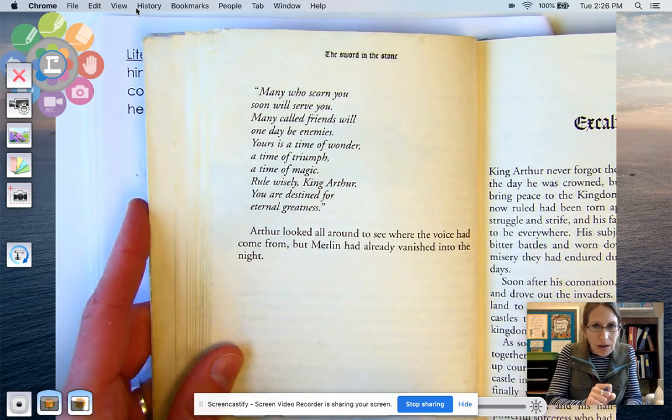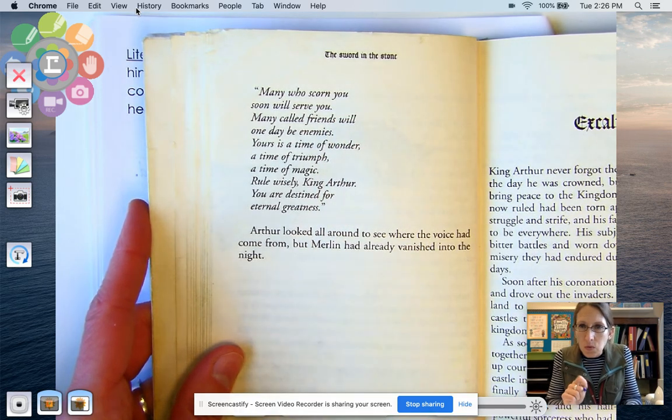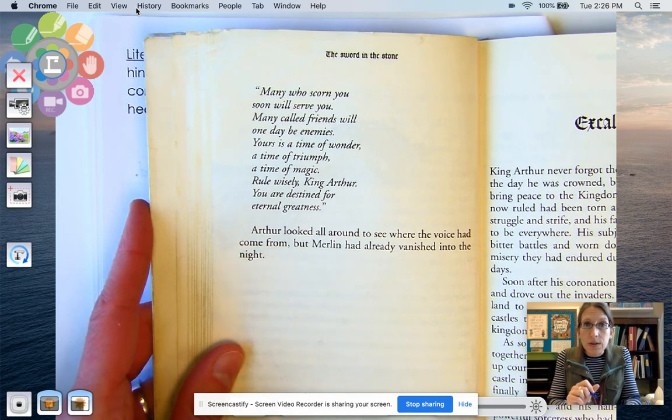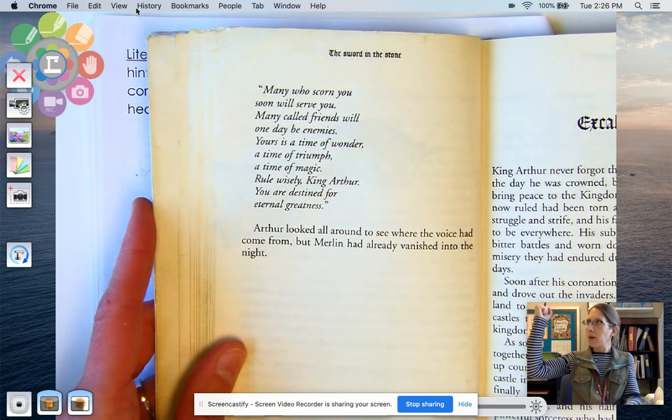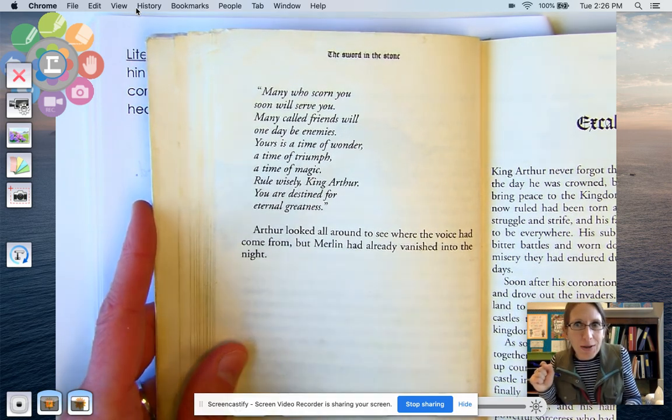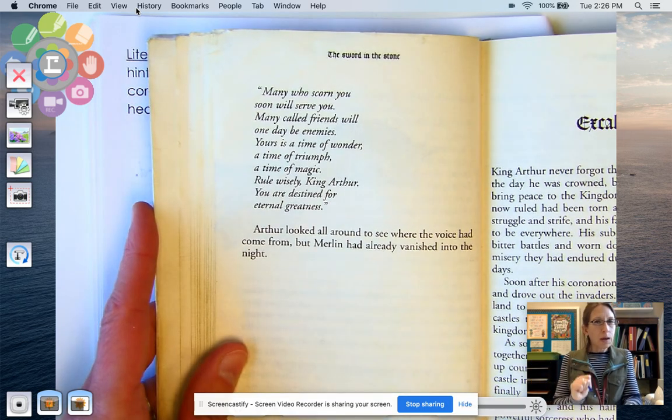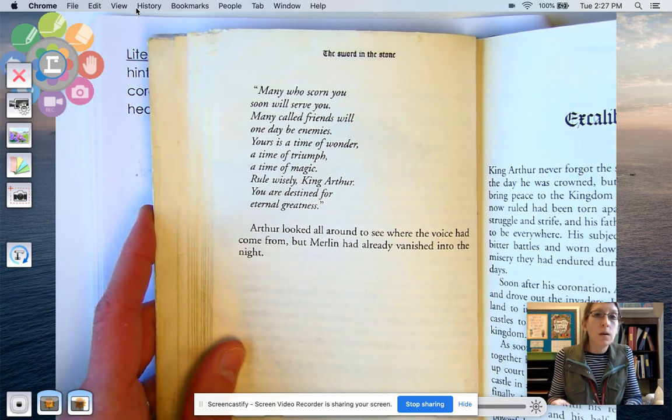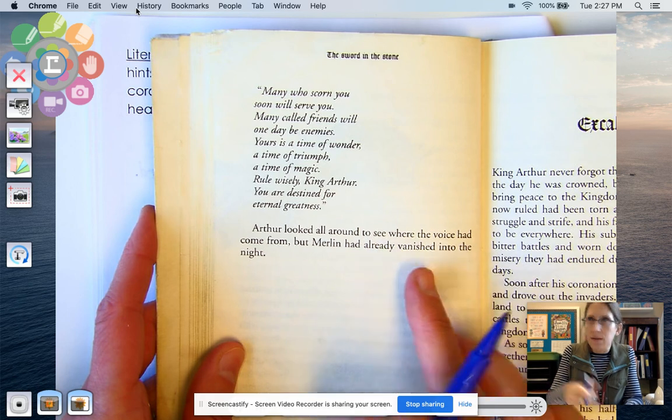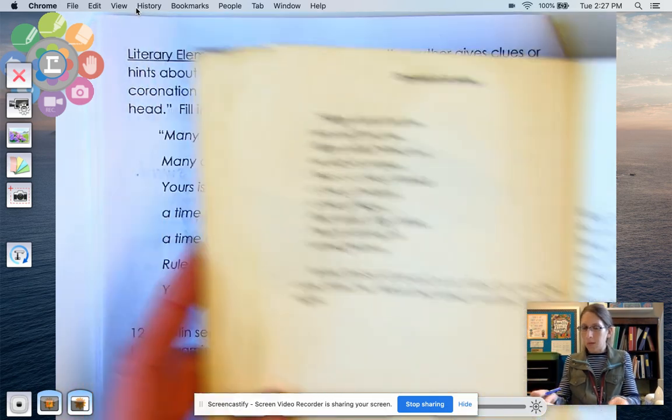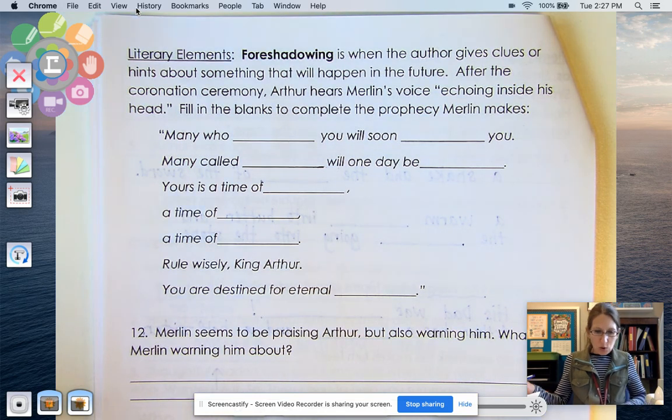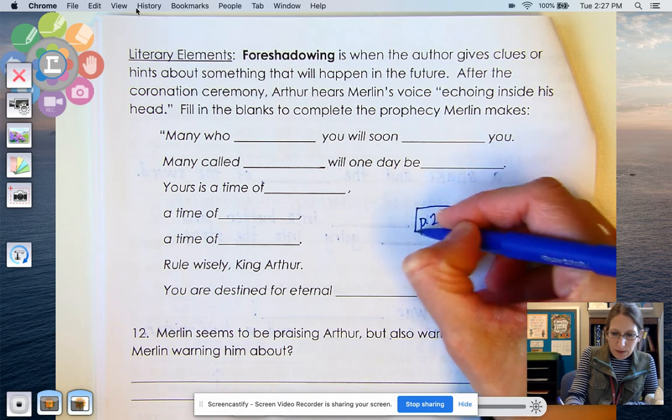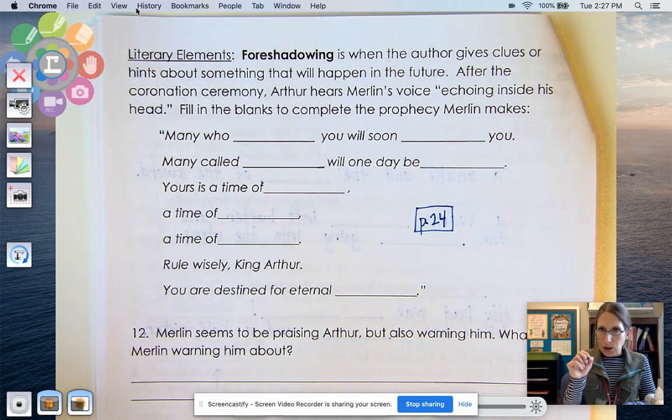Here it is. Many who scorn you soon will serve you. Many called friends will one day be enemies. Yours is a time of wonder, a time of triumph, a time of magic. Rule wisely, King Arthur. You are destined for eternal greatness. And then Arthur looks around, but Merlin had already vanished into the night. All right. So you are going to use page 24 to complete this one about foreshadowing.